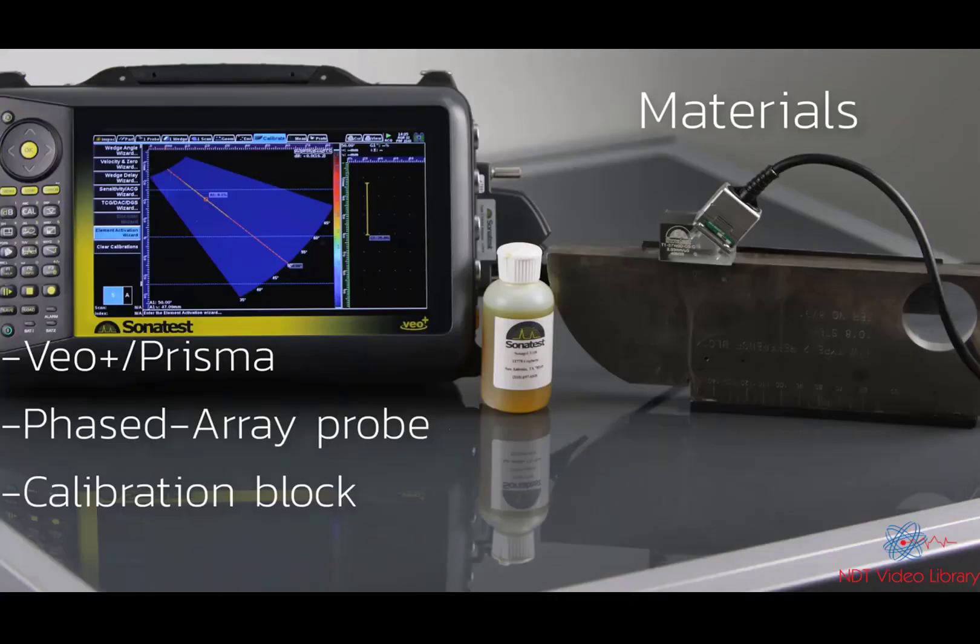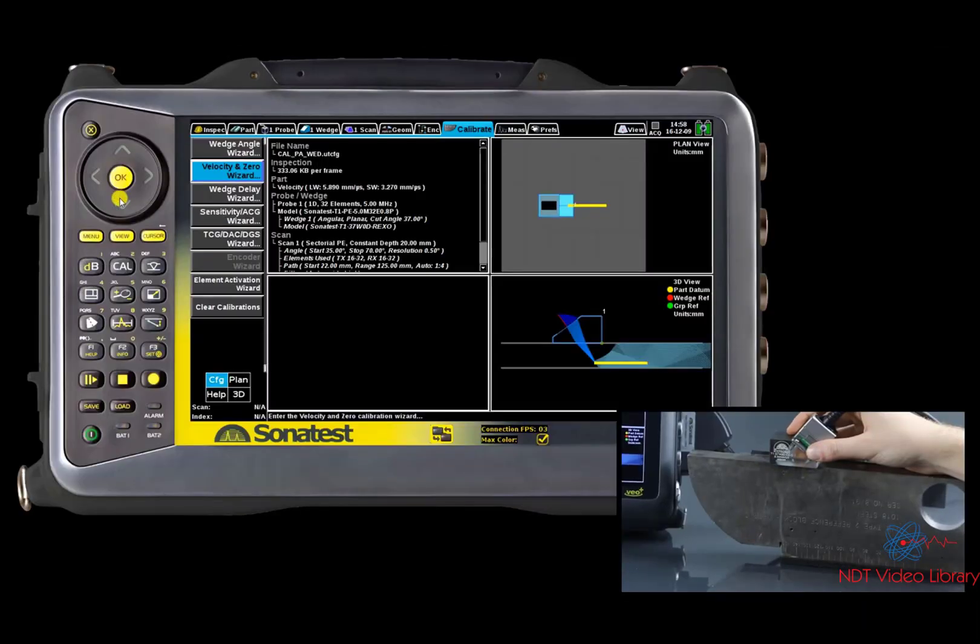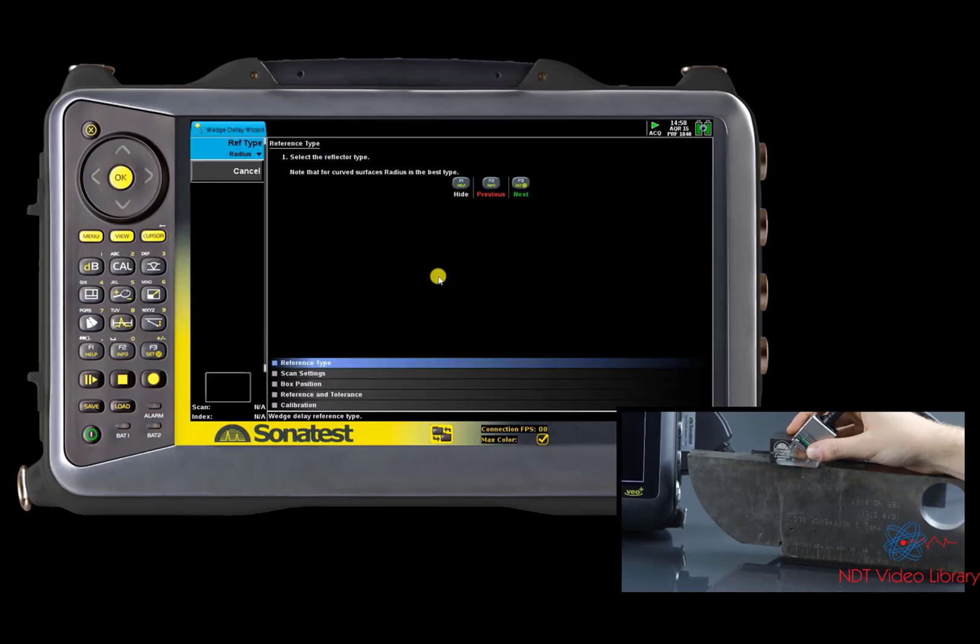The same equipment as the velocity calibration is required. We are going to select the wedge delay wizard. It is possible to do the calibration on a different reflector, but for this block, the radius is the best one to use.